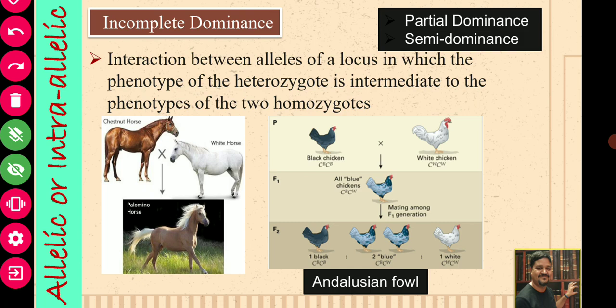Incomplete dominance is also known as partial dominance or semi-dominance. It is an interaction between alleles of a locus in which the phenotype of the heterozygote is intermediate to the phenotype of the two homozygotes. So in the case of complete dominance, homozygote and heterozygote had the same phenotype, but here the phenotype of the heterozygote is intermediate of both homozygotes. This indicates that both alleles will express their character, and there will be some intermixing between the characters or traits.